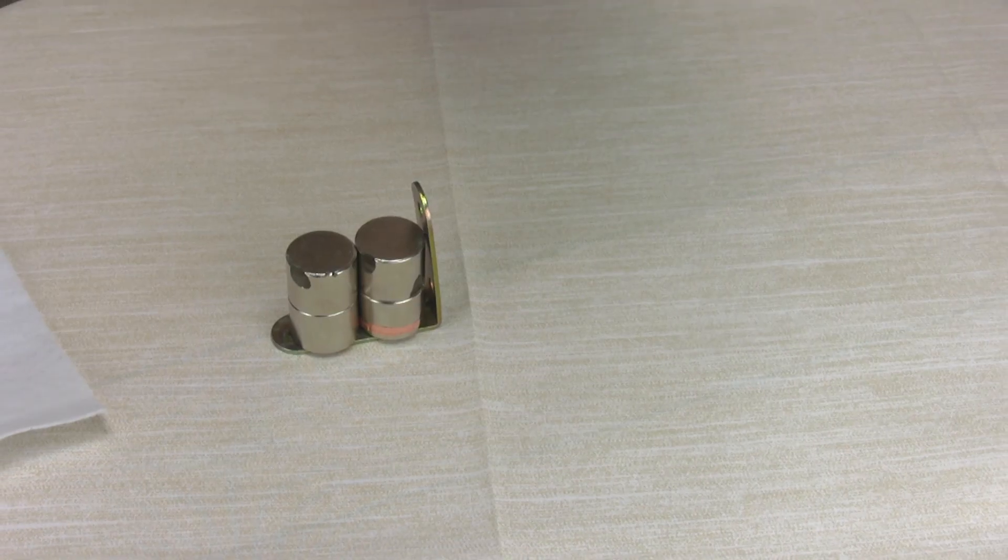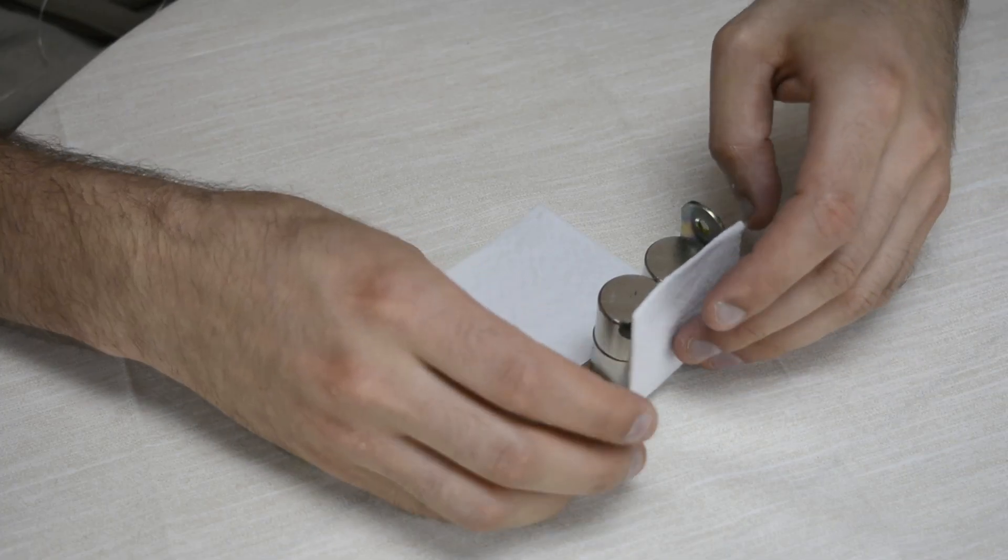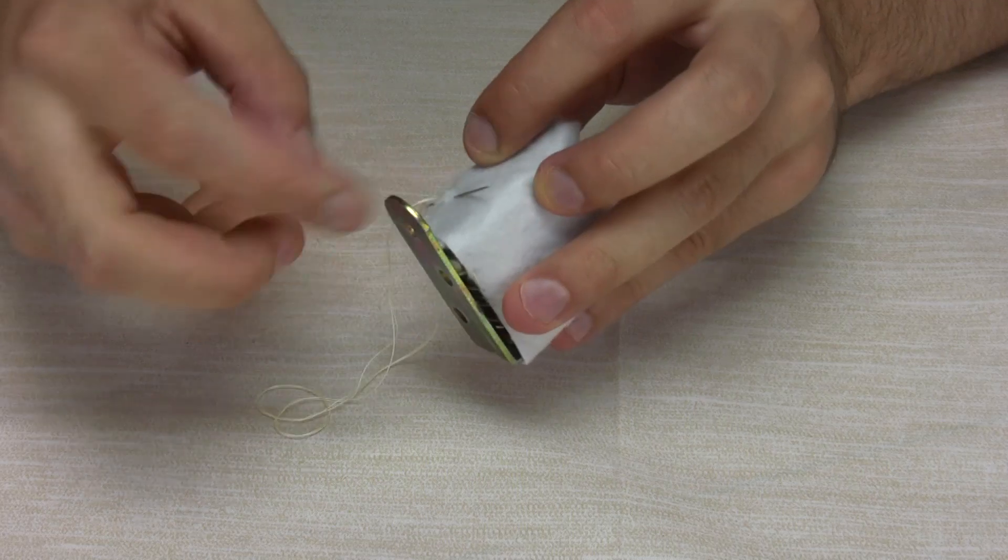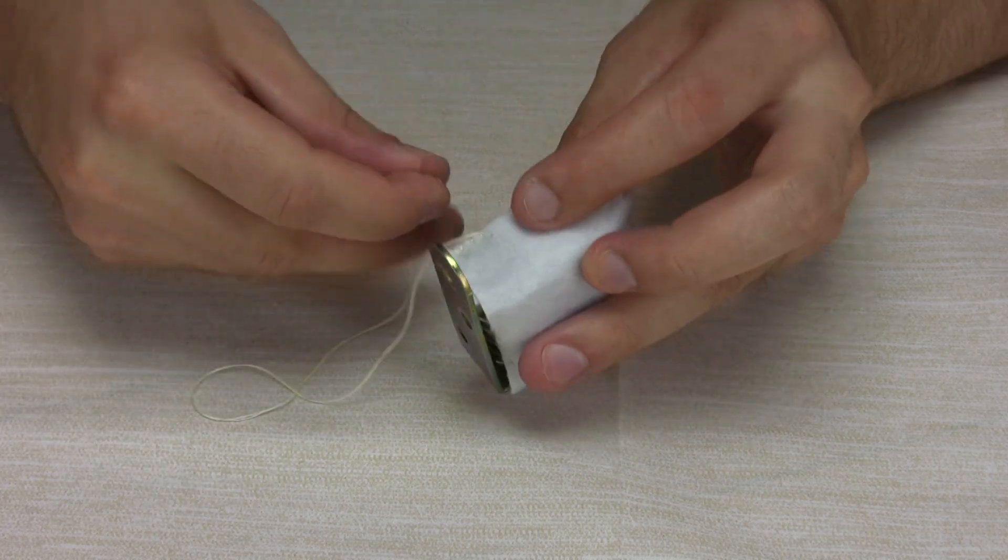Put a few neodymium magnets on an L-shaped bracket. Cover the bracket with felt or glue furniture sliders on the bottom.